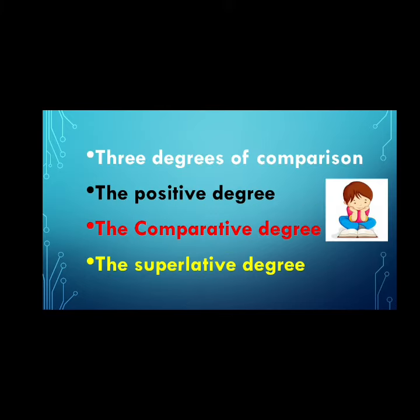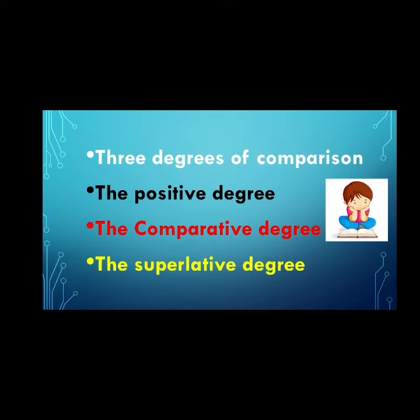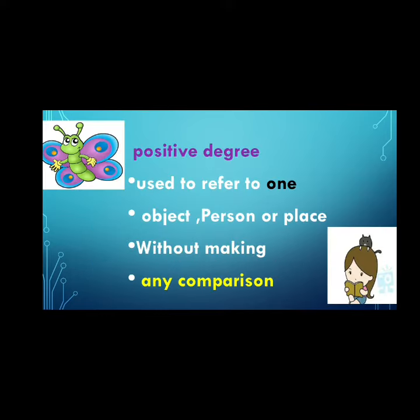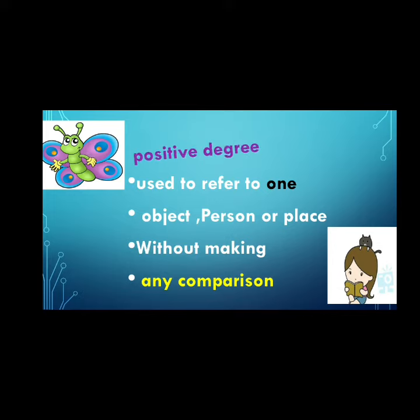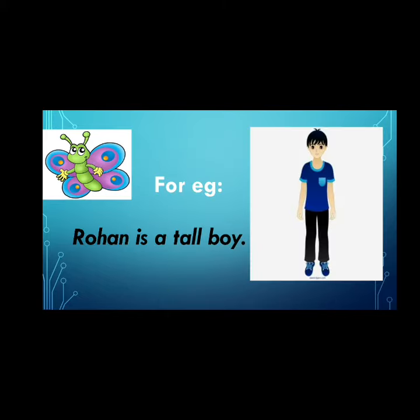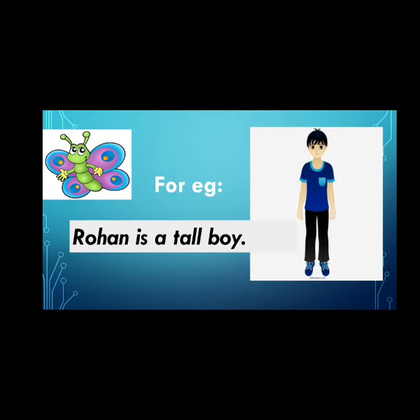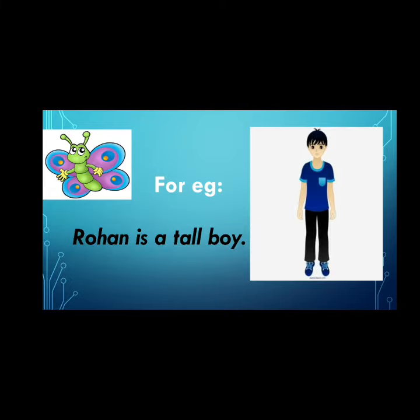Dear students, there are three degrees of comparison: the positive degree, comparative degree, and the superlative degree. Now let's start with the positive degree. It refers to one person, place, or object without any kind of comparison with others. For example, Rohan is a tall boy. Here tall is an adjective to Rohan without comparison to others.